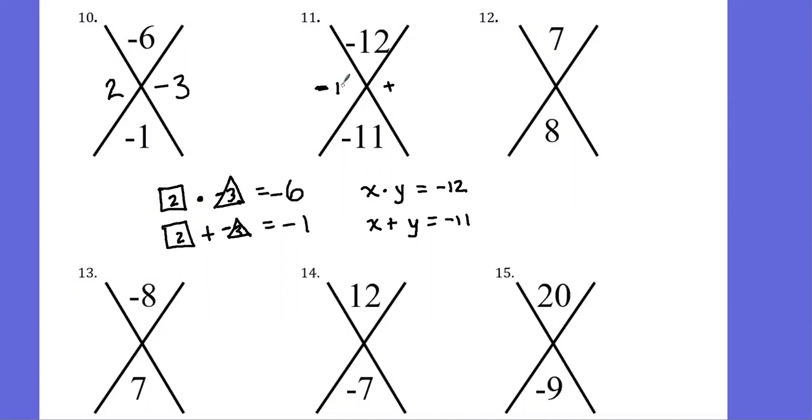As long as I put negative 12 and positive one here, this math works out. Negative 12 times positive one gives me negative 12, which is what I wanted. And if I add these two, negative 12 plus positive one gives me negative 11.